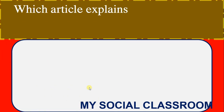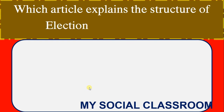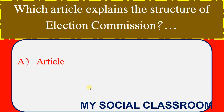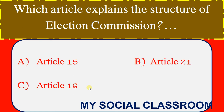Which article explains the structure of the Election Commission? Options: Article 15, Article 21, Article 16, Article 17. Correct Answer: Article 324.